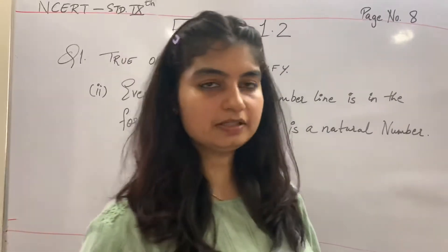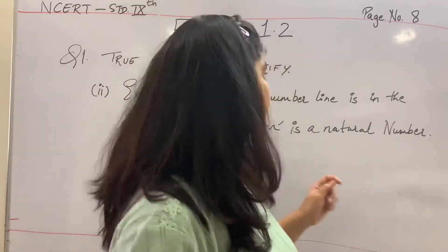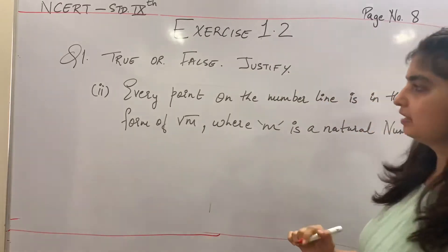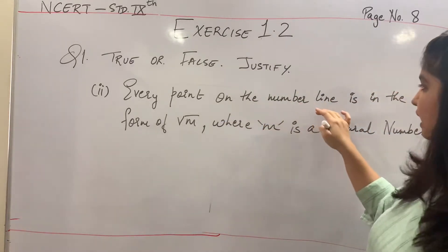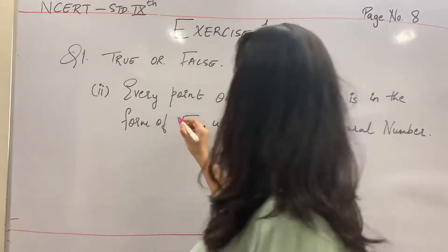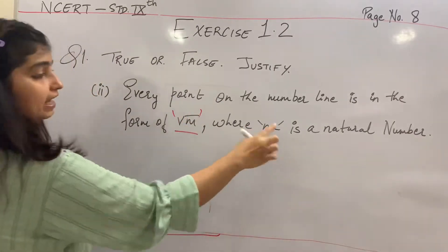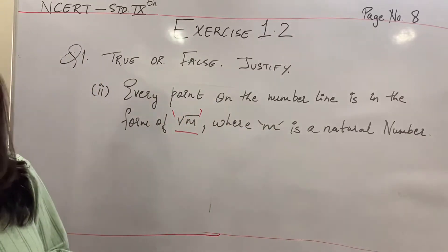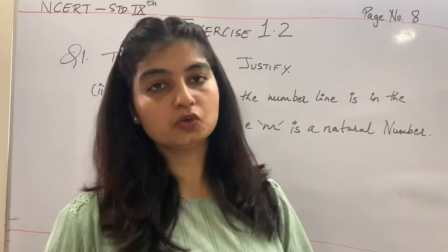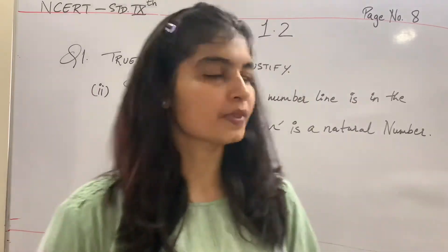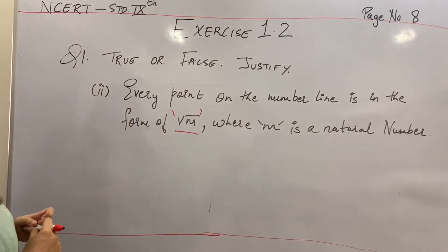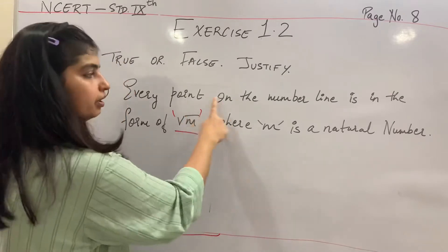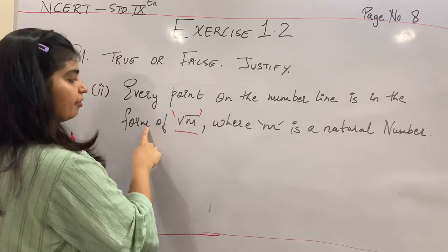Coming to the second question of the true and false section. That is every point on the number line is in the form of root M where M is a natural number. Abhi hamein yeh dekhna hai ki statement true hai ya false. So, coming to the statement again, yeh log kya keh rahe hain ki every point on the number line is in the form of root M where M is a natural number.